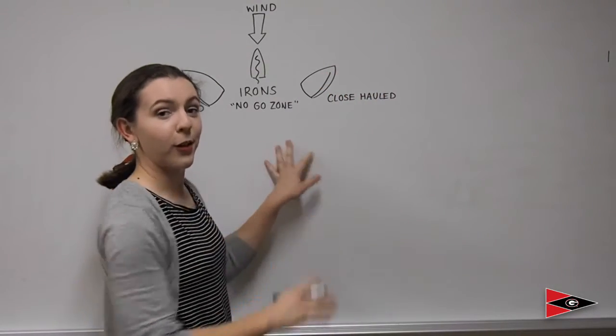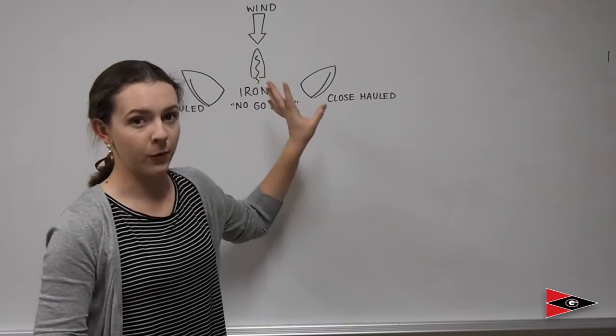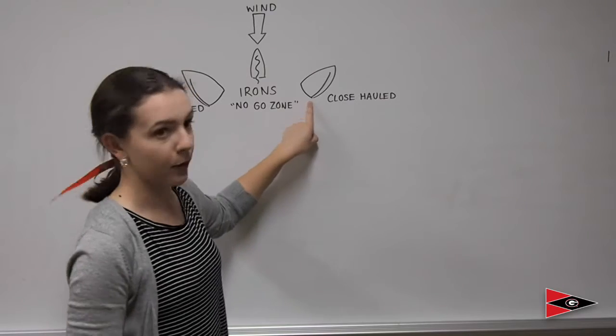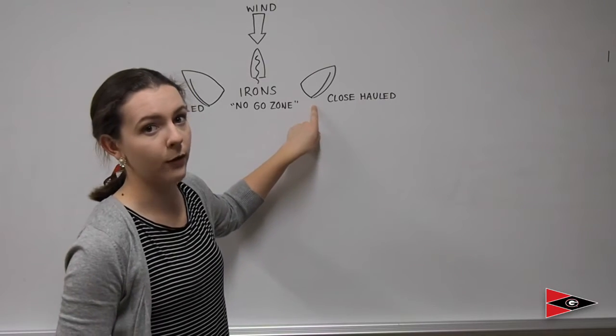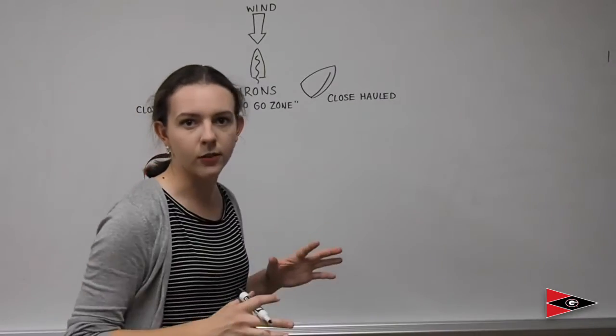A little ways off from irons is your close-hauled position. This is what you'll be using to make distance up into the wind. Notice here that your boom is at the corner of your boat away from the wind, so you're hauled in as close as you can be.